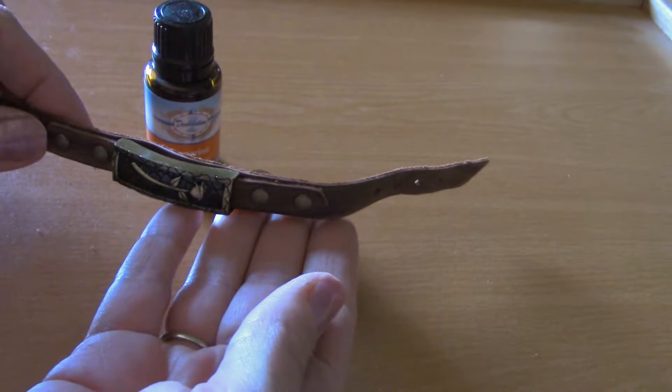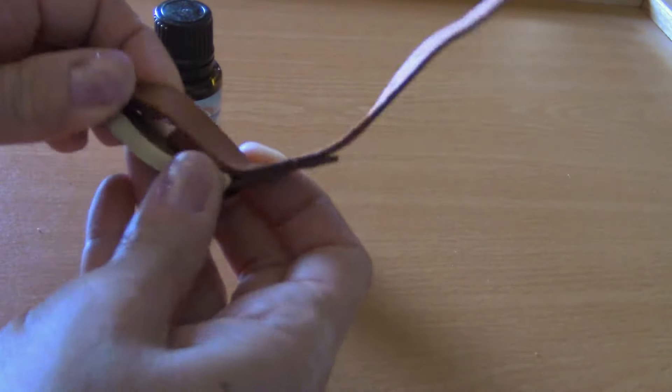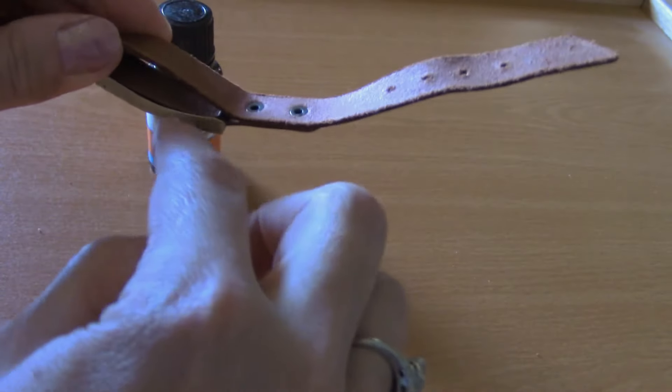In order to use these with essential oils, you just have to take the bracelet off. In here you can lift this piece away and there's another piece of leather right inside.